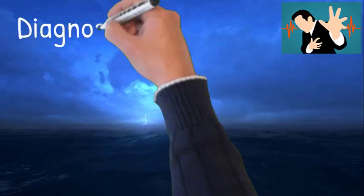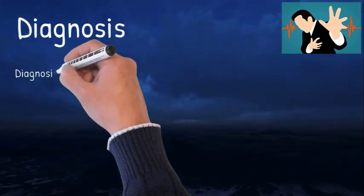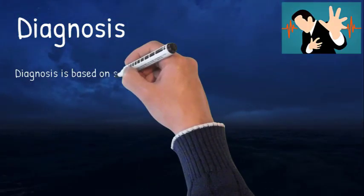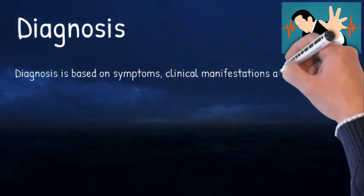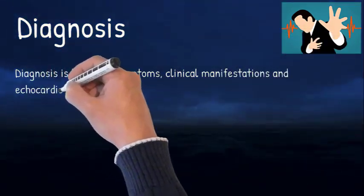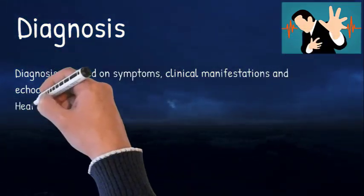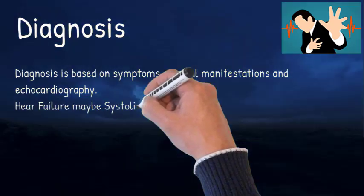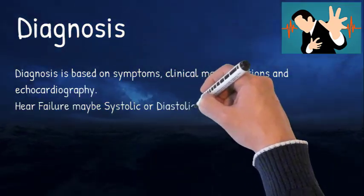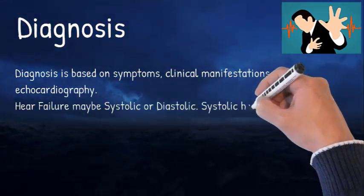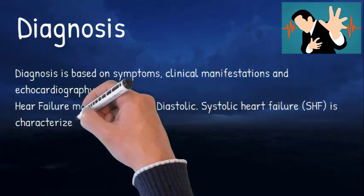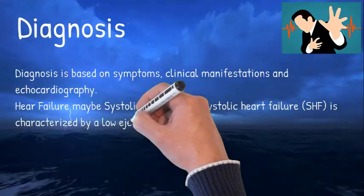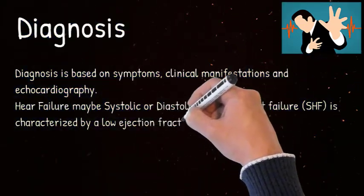Diagnosis is based on symptoms, clinical manifestations, and echocardiography. Heart failure may be systolic or diastolic. Systolic heart failure (SHF) is characterized by a low ejection fraction — EF less than 40%, though some clinicians use less than 50%. The EF equals stroke volume divided by left ventricular volume.